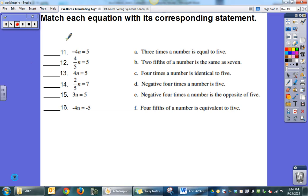Alright, I'm going to go through and read these and find the one that matches. So, 3 times a number is equal to 5. If I look over here, the only one that contains a 3 is number 15. So, double check, 3 times a number is 5. 2 fifths of a number is the same as 7. So there's 2 fifths of a number is the same as 7. So 14 is b.